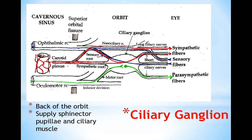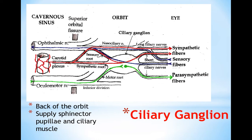The ciliary ganglion is associated with the oculomotor nerve because it receives pre-ganglionic parasympathetic fibers via this nerve. Sympathetic fibers also pass through it from the carotid plexus, which is a nerve plexus around the carotid artery. The ciliary ganglion is a pinhead-size ganglion; it lies at the back of the orbit and supplies the constrictor pupillae and the ciliary muscles.